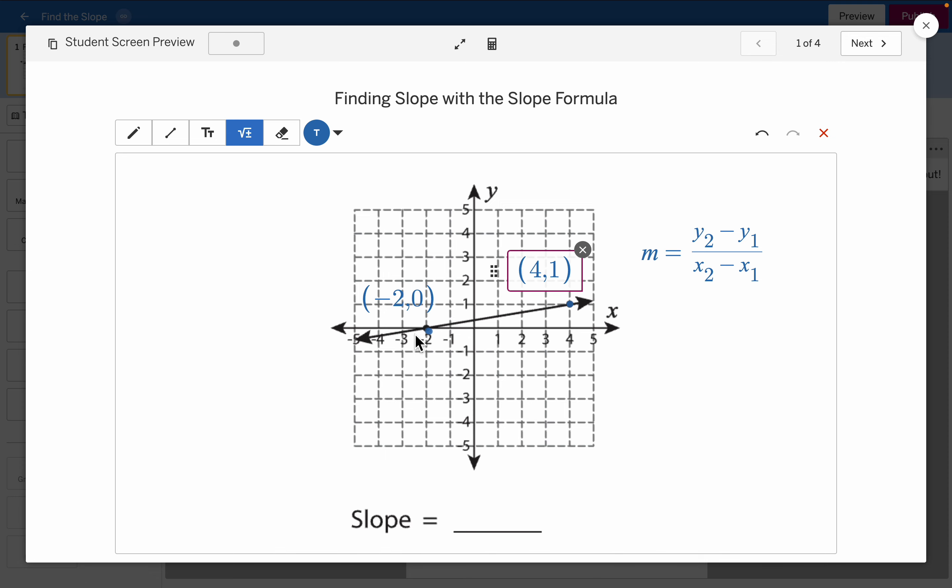I'm going to let my 4, 1 be my 2s, and I'm going to let my negative 2, 0 be my 1s. But it will work either way, just as long as you don't get the X's and Y's mixed up.